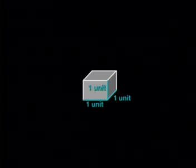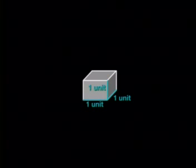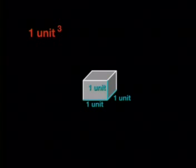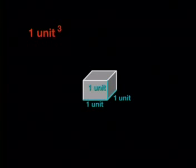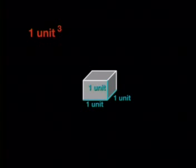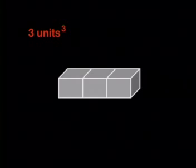Do you think we will find the same thing happening with another shape? I want to use these cubes for my next investigation. I will call the length of the cube 1 unit. That means the volume of 1 cube will be 1 cubic unit — 1 unit times 1 unit times 1 unit. Here I have a structure of 3 cubes, so the structure has a volume of 3 cubic units.